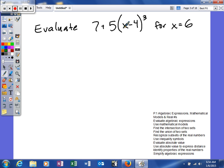For an algebraic expression, you would basically need to cube this binomial, multiply everything by 5, and then add 7.